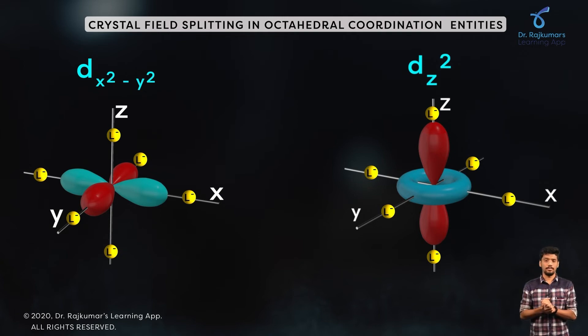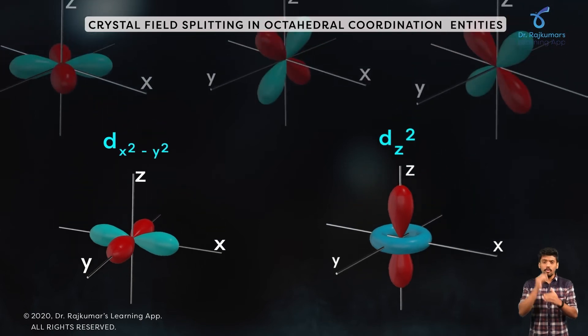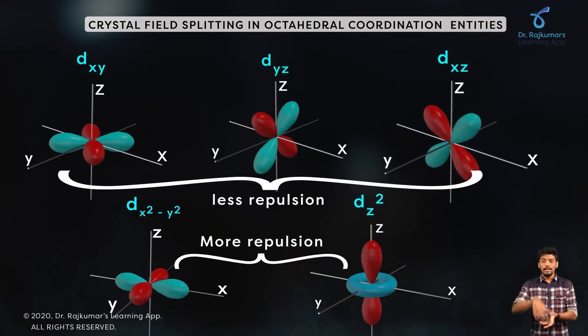From this, we can observe more repulsion. This is why the repulsion is more when the metal d orbital is directed towards the ligand than when it is directed away from the ligand.